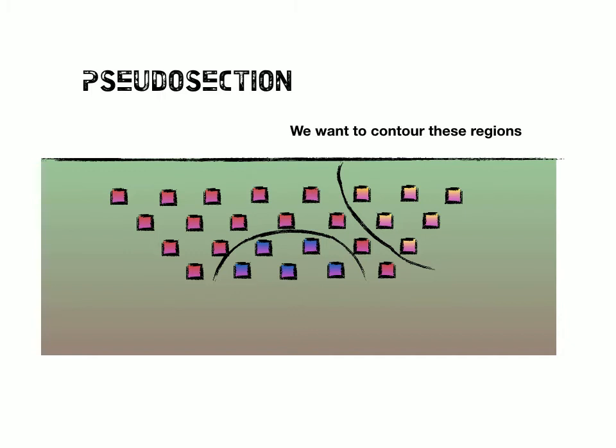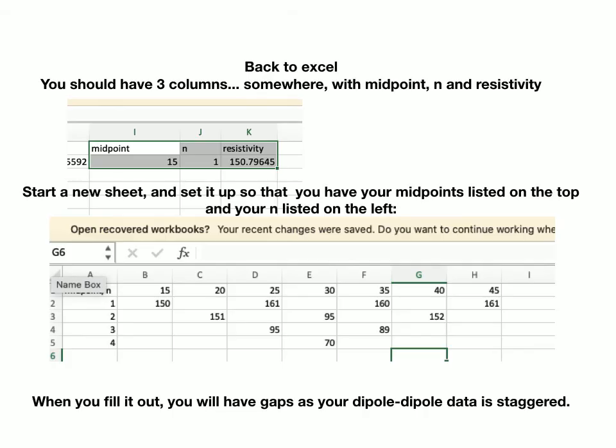So how can we do that? We're going to carry on with Excel because it's a tool available to everyone. And what we should have at this point in your Excel spreadsheet are three columns that look something like this. It's a midpoint, your n,